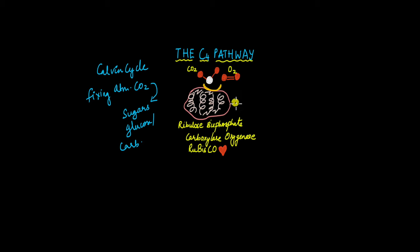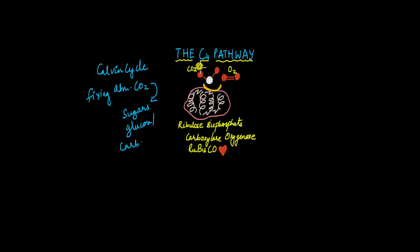This enzyme has binding sites for both carbon dioxide and oxygen. This doesn't mean that both can bind at the same time — at any given time, either carbon dioxide or oxygen can bind to this enzyme. This is not always good, as I'll explain in a while. But first, let's understand the reactions that occur when carbon dioxide binds to Rubisco and when oxygen binds to Rubisco.